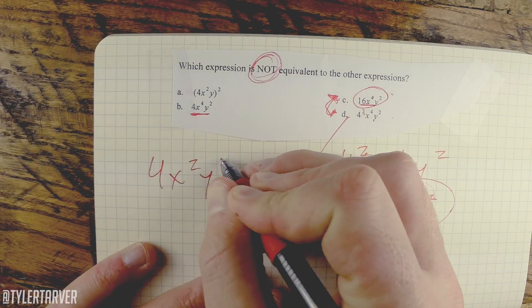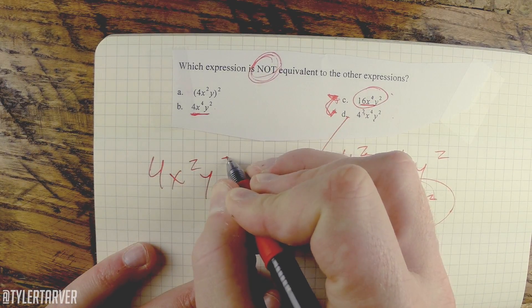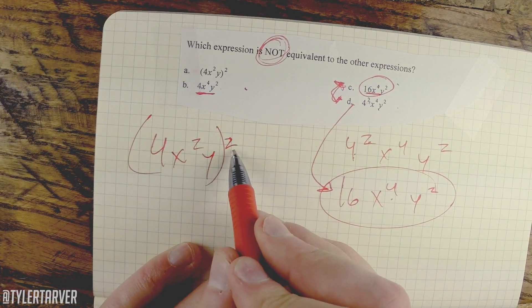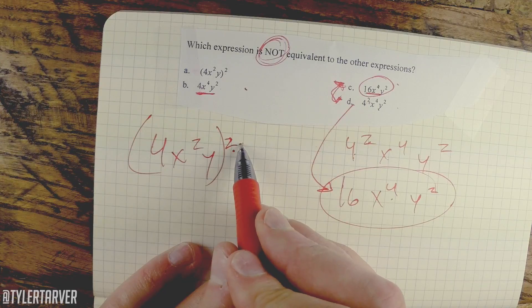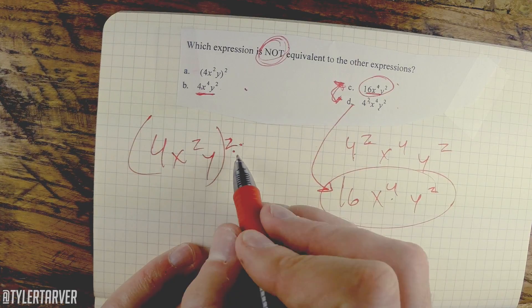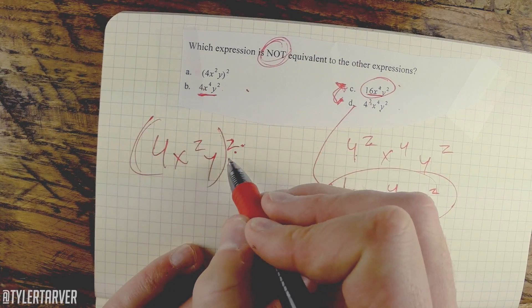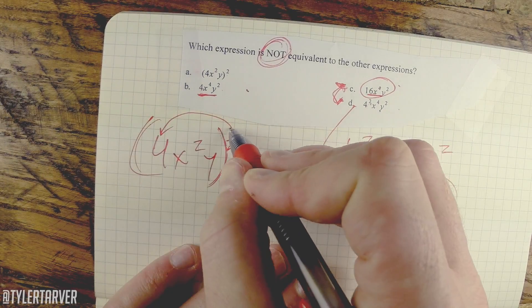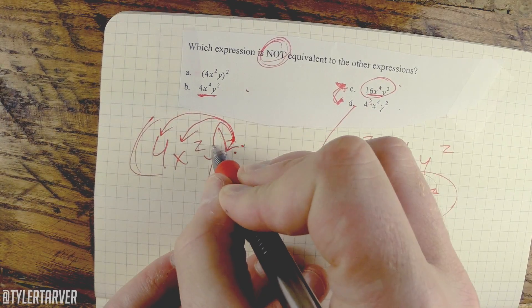Okay, squared. Now this one's a little different because that squared, that 2, that exponent 2 is on the outside. So that means you have to distribute. Anytime you've got something that's got the parentheses, you distribute to everything. So it goes there, there, there, and there. So let's go ahead and work this.